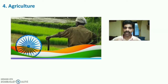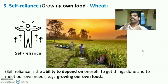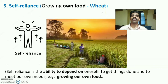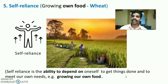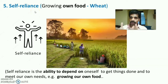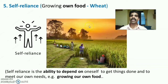The fourth priority was development of agriculture for stable economic status. The fifth priority was self-reliance — growing food, specifically wheat, within the country for consumption by the bulk of the population. Self-reliance means the ability to depend on oneself to meet one's own needs — economic self-reliance through domestic food production.